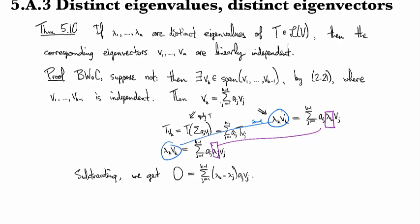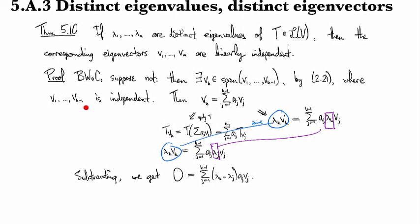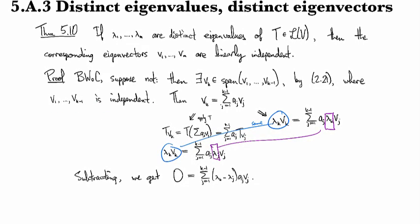We get: on the left side the two blue terms cancel, we have zero. And then on the right side I can factor out the common quantity of a_j v_j and we have lambda_k minus lambda_j on each side.